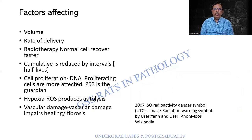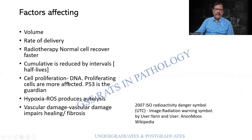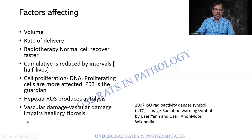Again, the factors affecting radiation include volume and rate of delivery. During radiotherapy, normal cells recover faster, and cumulative dose is reduced by intervals — that is why a break is given and then treatment continues. Proliferating cells are more affected, and P53 acts as a guardian. Hypoxia and ROS produce autolysis. Vascular damage can lead to impaired healing as well as fibrosis.